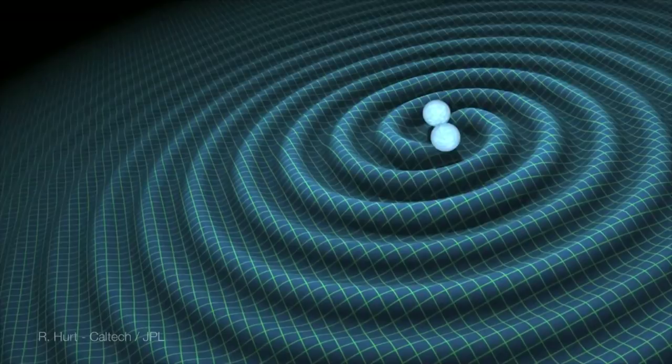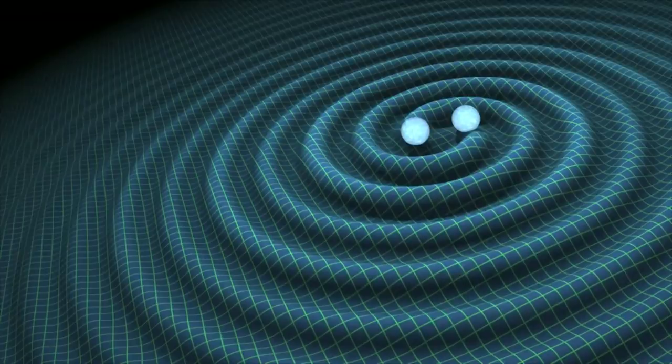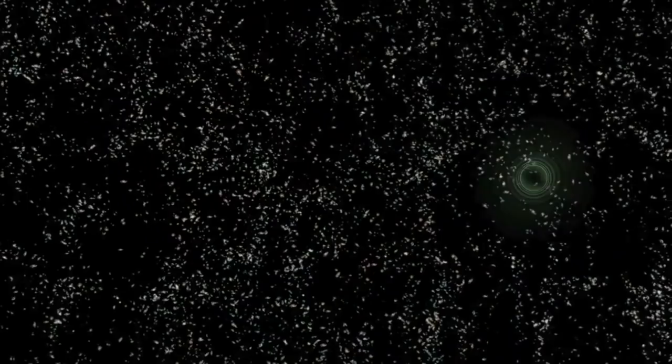The spacetime moves in and out, propagating at the speed of light. They're important because they are a prediction of general relativity, so detecting them gives further confirmation that general relativity is right. They also open up an entirely new window on the universe. Almost everything we've done in astronomy, barring a few cosmic rays and neutrinos, has been mediated through light.